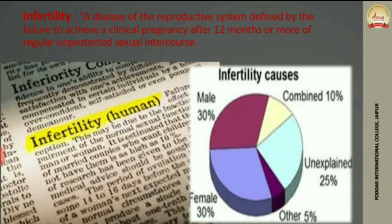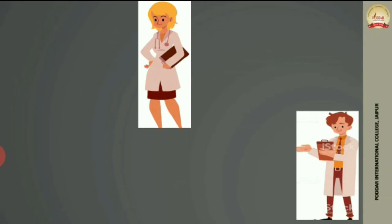According to technical guidelines, infertility is a disease of the reproductive system where a clinical pregnancy cannot be established through normal natural fertilization. Studies show that approximately 30% of infertility cases are due to male factors, 30% due to female factors, about 10% are combined, and the rest are other causes.